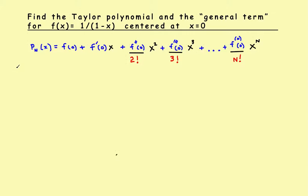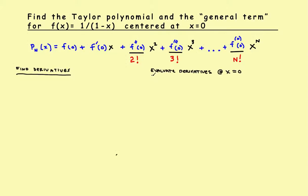We'll use two columns: one to find the derivatives, and one to evaluate the derivatives at x equals 0. So let's start by writing the original function: f of x is equal to 1 divided by 1 minus x.